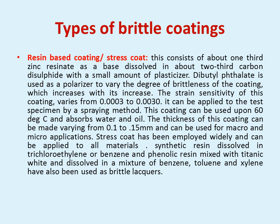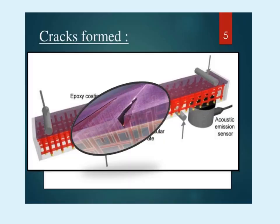Types of brittle coatings: First one is resin-based coating or stress coat. This consists of one-third zinc resinate as a base dissolved in two-thirds carbon disulfide with a small amount of plasticizer. Dibutyl phthalate is used as a plasticizer to vary the degree of brittleness of the coating. The strain sensitivity of the coating varies from 0.0003 to 0.003. It can be applied to the test specimen by spraying method. This coating can be used up to 60 degree centigrade and absorbs water and dye. The thickness of the coating can be made from 0.1 to 0.15 mm and can be used for macro and micro applications. Stress coat has been employed widely. This is an example showing stress coat wherein epoxy coating is done.